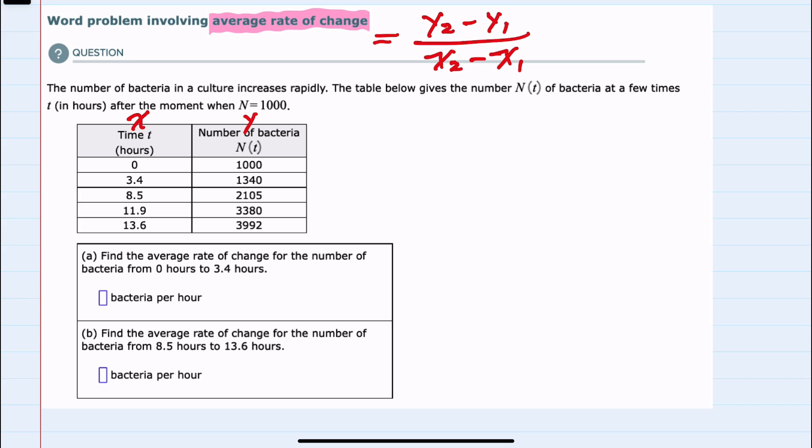Our first question, part A, asks us to find the average rate of change for the number of bacteria from 0 hours to 3.4 hours. So moving from 0 hours to 3.4 hours, we will have our x1 and x2, and we have our y1 and y2 to substitute into our formula.